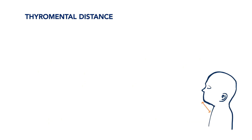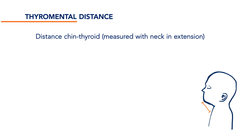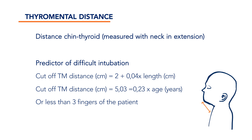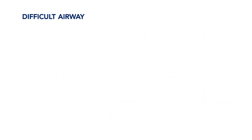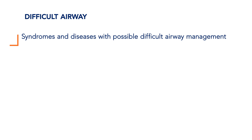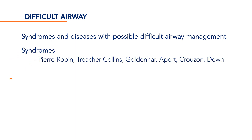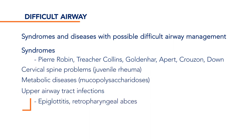Another easy assessment of the airway is the thyromental distance, which is the distance between the middle of the chin and the middle part of the thyroid. A short thyromental distance is also called retrognathia or micrognathia. Especially in the paediatric population, there are many syndromes and diseases prone to difficult airway. Next to the known craniofacial malformations, metabolic diseases such as MPS, upper airway infections such as epiglottitis, and hemangiomas and lymphangiomas can all cause a difficult paediatric airway.